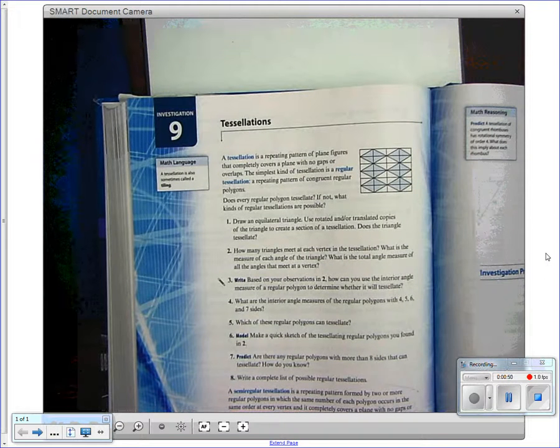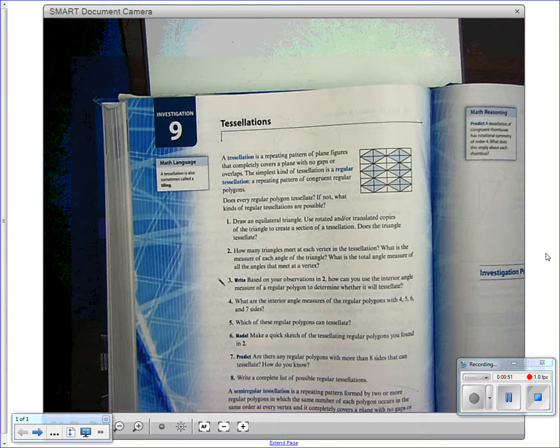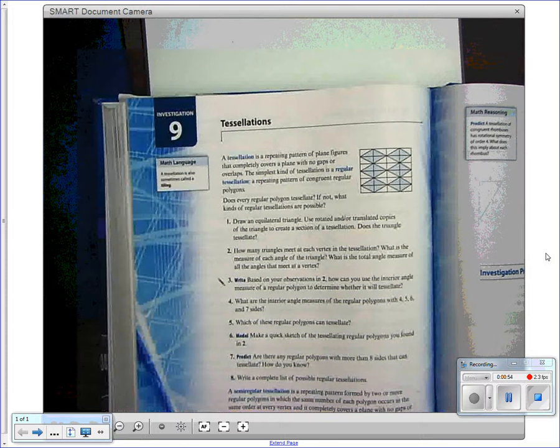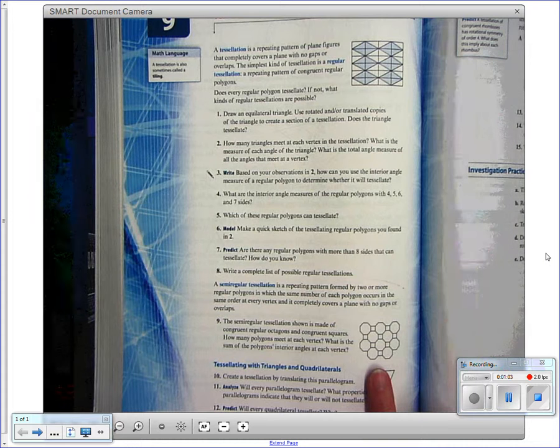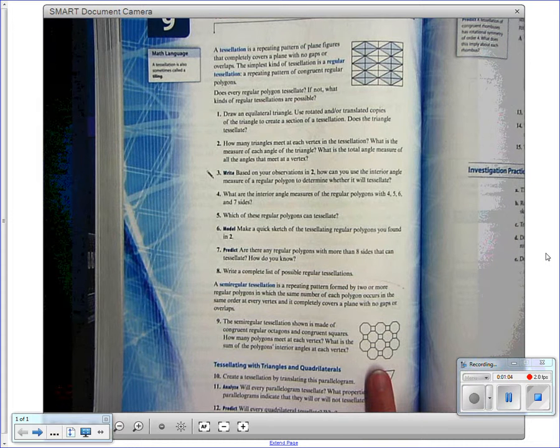If you think about a soccer ball, it's composed of two different regular polygons, and so it is a semi-regular tessellation, just like this one that they show you in the book. So that would be an example of a semi-regular tessellation that some of you have probably seen in real life.